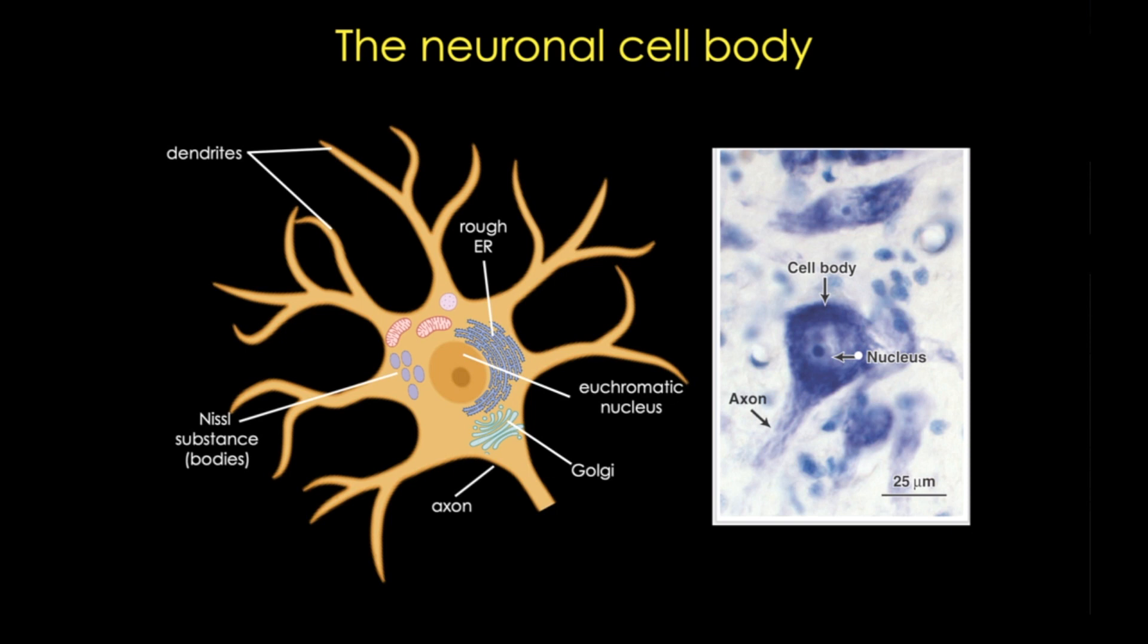Another important component of the cell body are neurofilaments. These are specific intermediate filaments that are produced in the cell body, but then they extend into axons and dendrites where they provide structural support.